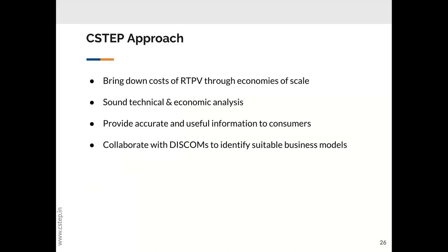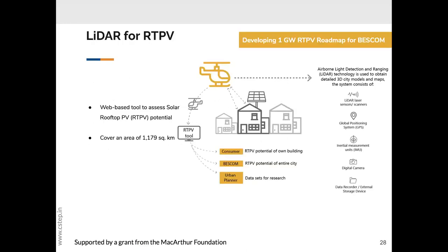Although there are net metering policies, some states only allow net metering for certain consumer categories. There's an MNRE subsidy but it's not available for all consumer categories. There's a lot of uncertainty and these issues don't get clearly explained to end consumers or developers becoming RESCOs for the rooftop sector. Also, kilowatt-scale rooftop systems typically cost higher, leading to higher tariff rates determined by DISCOMs for feasibility, which again stresses DISCOM finances. What we wanted to do with BESCOM was understand how to bring down the cost of rooftop through economies of scale, using technologies that provide a proper assessment of the rooftop with technical and economic aspects including shadows.